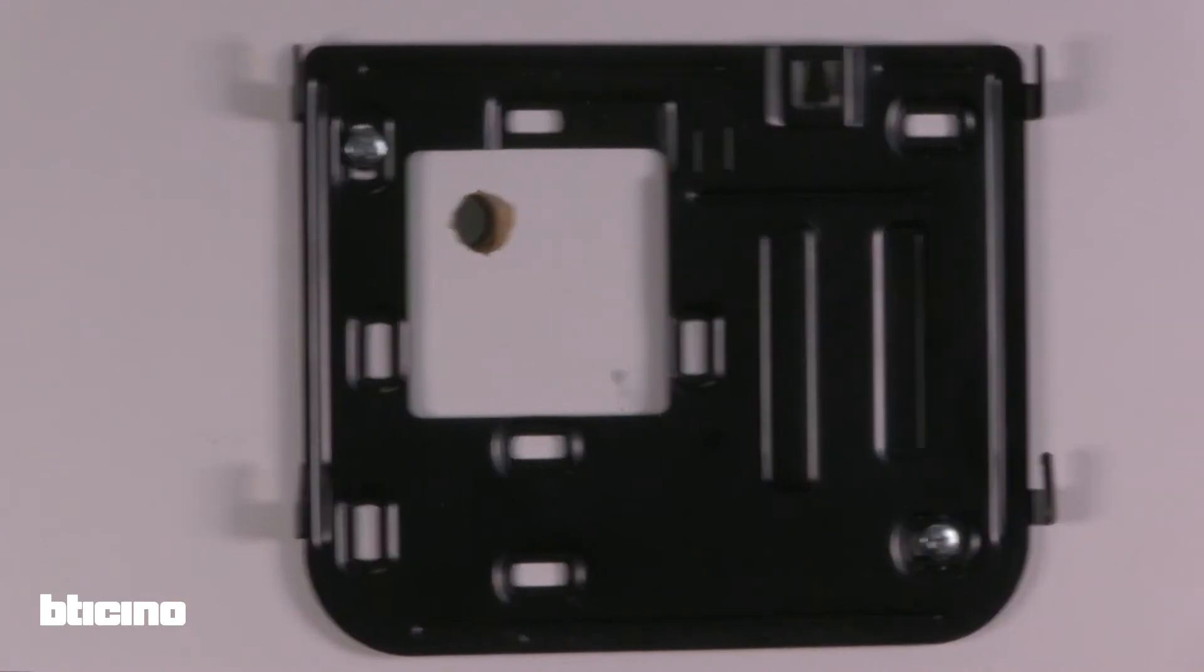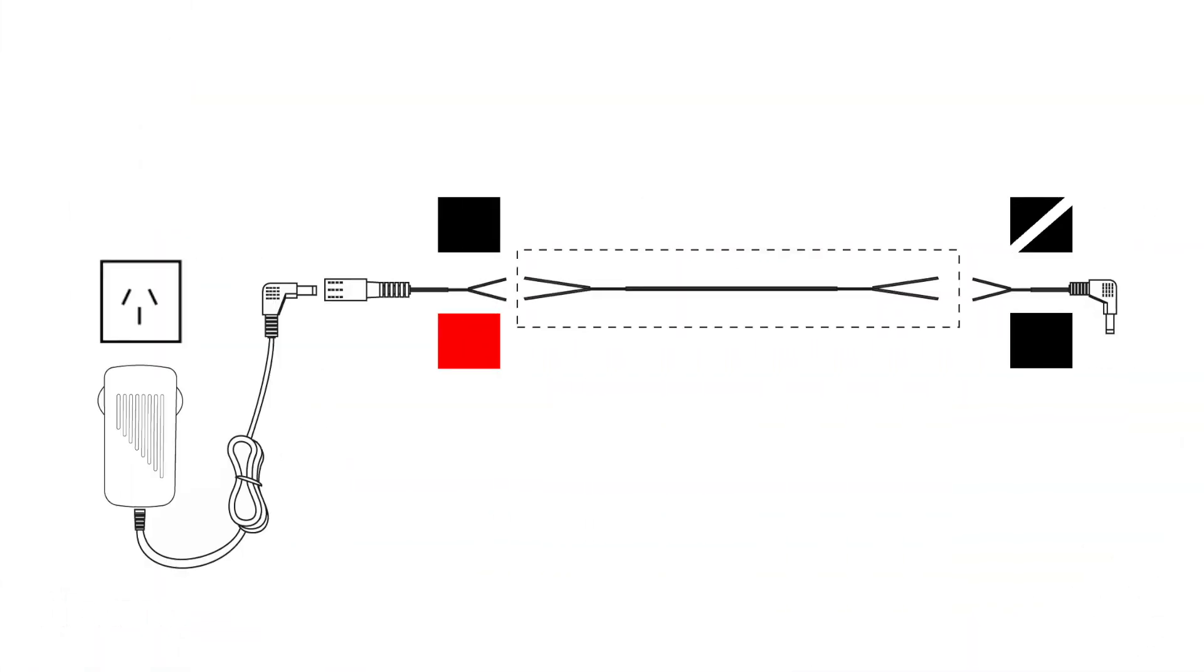Run the power supply through corrugated conduit. The plug will not fit through the conduit, so an extension must be built using the two flying connectors which can be found in the kit. Use the diagram on page 4 of the manual to complete this step.